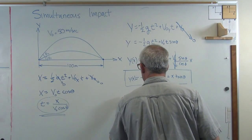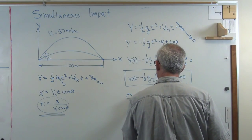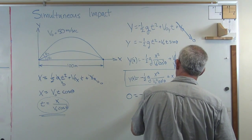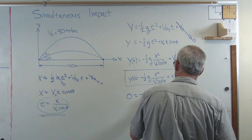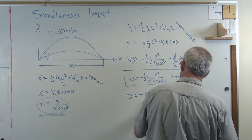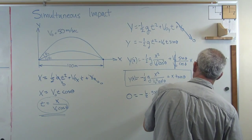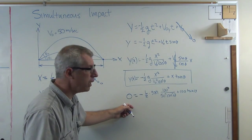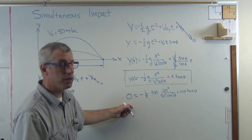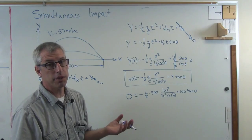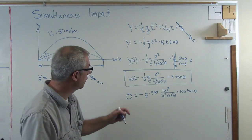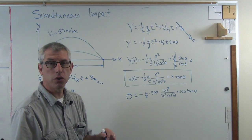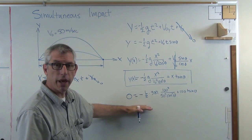Zero equals -½ times 9.81 times 100² over 50² cosine² theta plus 100 tangent theta. Okay, so there's an expression right there where the only unknown is theta. One equation and one unknown. It seems like I ought to be able to solve that. So go to your scientific calculator to MathCad or something like that. And you're going to find out that there are two values less than 90 degrees that solve that expression.